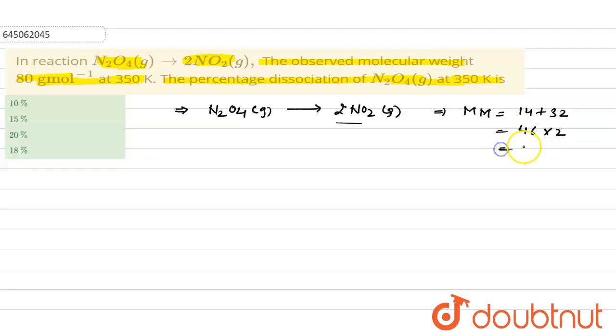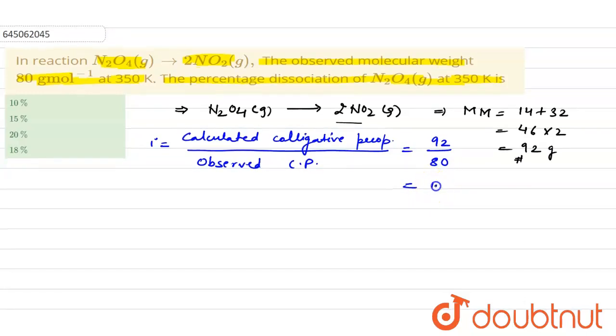Now from here we can find out i, that is van't Hoff factor, which is calculated colligative property. So it will be 92 divided by 80, the answer would be equal to 1.15. This is the van't Hoff factor.